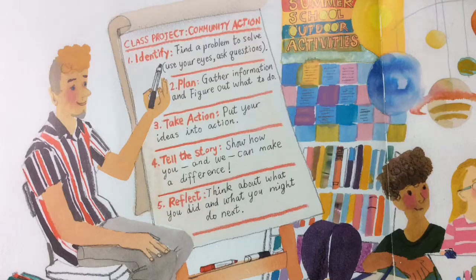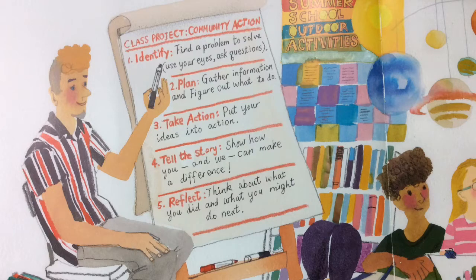Now, remember that page I showed you with Mr. J? They identified their problem — they used their eyes and they asked questions — and now they're beginning to plan. They're gathering information and figuring out what to do. Then they will take action. Let's see how they go about doing this.